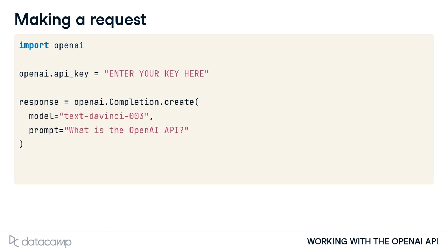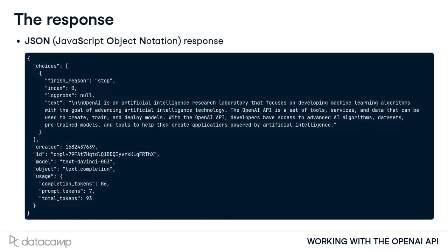We'll discuss prompts in greater detail later in the course. Let's take a look at the API response. The API returns a JSON response. JSON stands for JavaScript Object Notation. It's a nested data format that resembles a Python dictionary with keys and values. The response has several keys — choices at the top, and created, id, model, and others at the bottom.